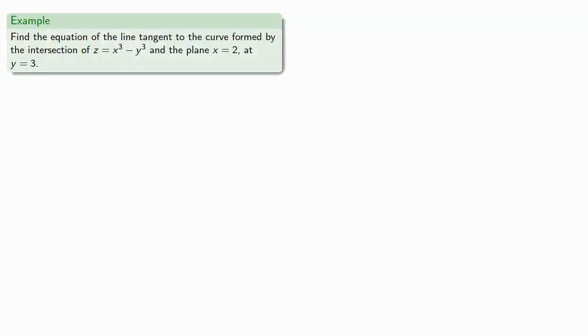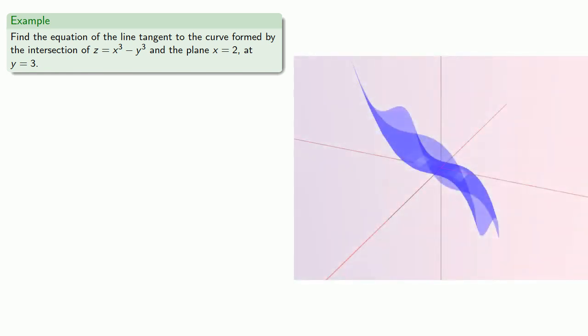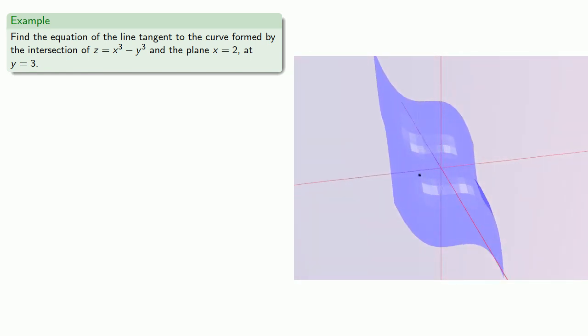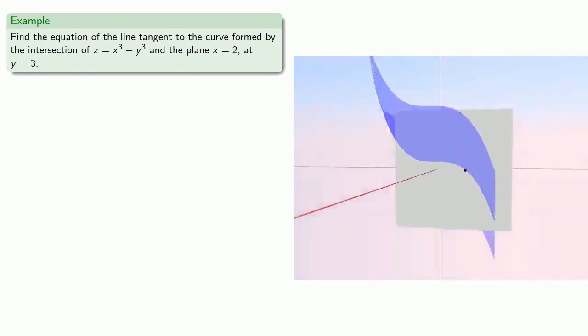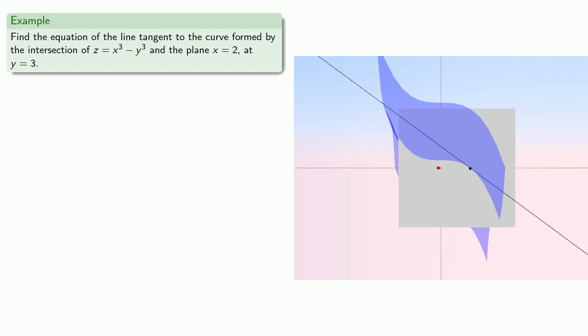Find the equation of the line tangent to the curve formed by the intersection of z equals x cubed minus y cubed and the plane x equals two at y equals three. So to clarify the geometry here, we have some sort of surface and we're going to cut this surface with a plane and that will give us a one-dimensional curve and I'm interested in finding the tangent line to that curve at a particular value of y.